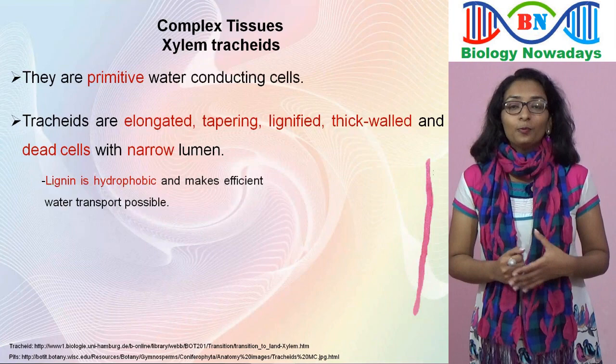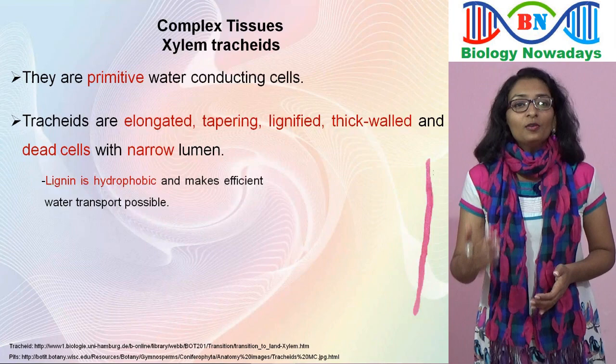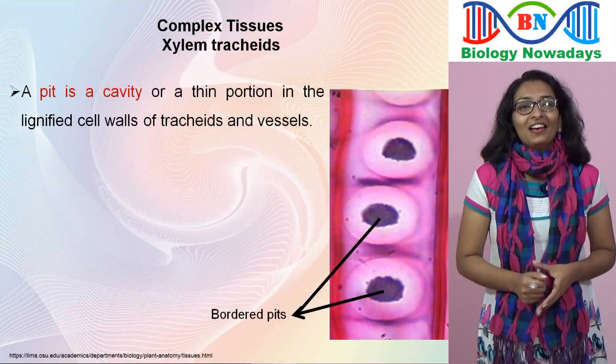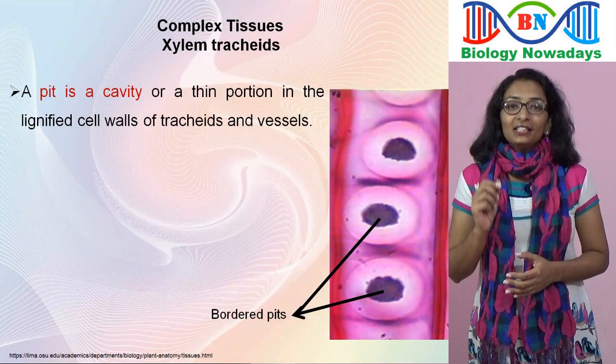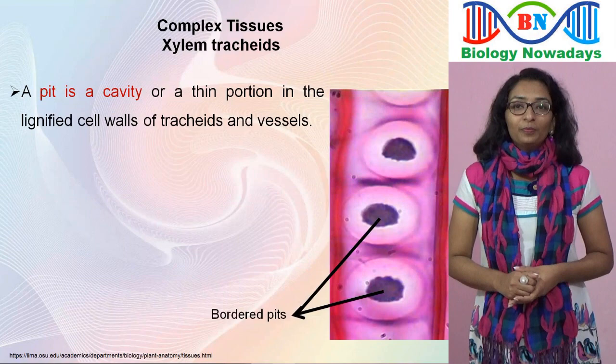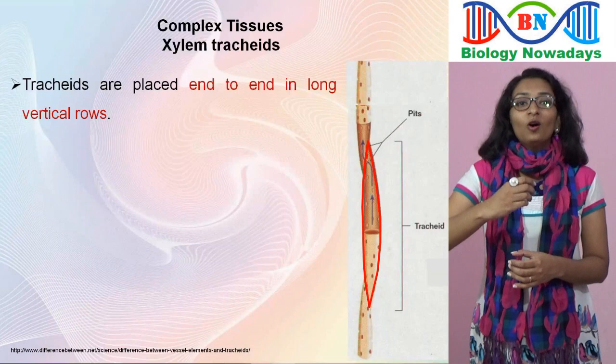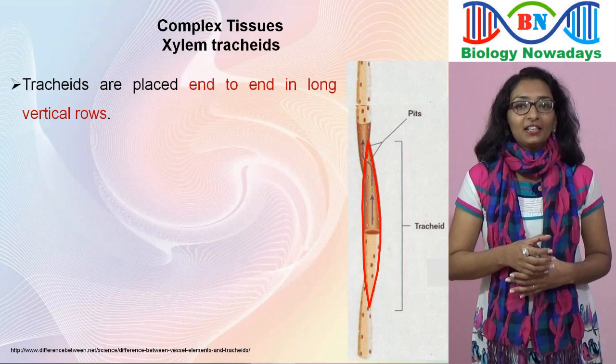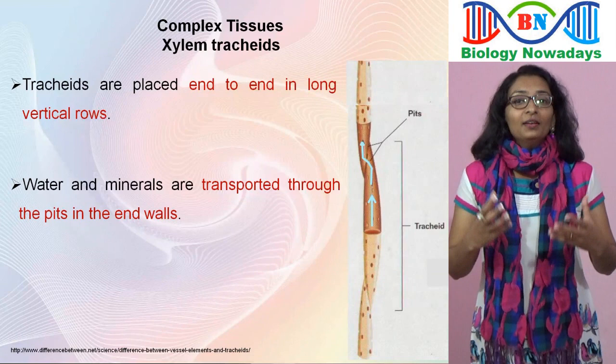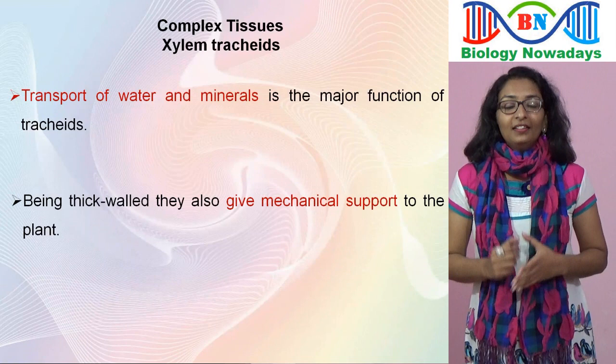The hard lignified walls have one or more rows of bordered pits. A pit is a cavity or a thin section in the lignified cell walls of tracheids and vessels. They help in the lateral movement of water between these cells. A bordered pit means a pit which is overarched by the cell wall. Tracheids are placed end to end in long vertical rows, and water and minerals are transported from one tracheid to the next through the pits in the end walls. Being thick-walled, they also give mechanical support to the plant.